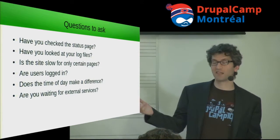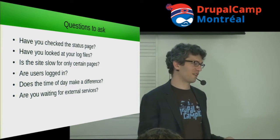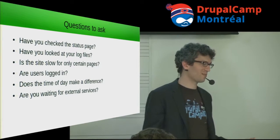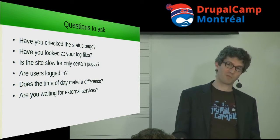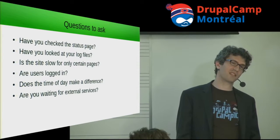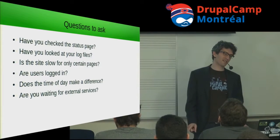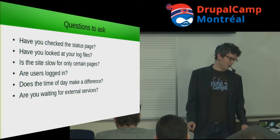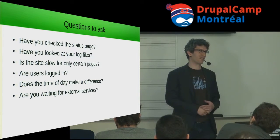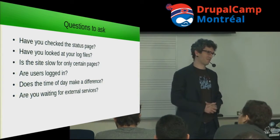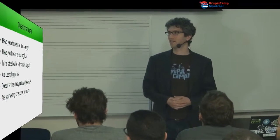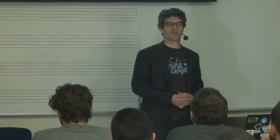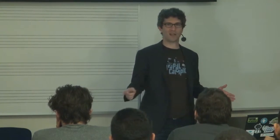Are certain pages slower than others? Say it's a views page — maybe you need to work on your view, or custom code isn't working properly, while other pages are fine. Time of day is also an issue. External services are another concern: if your site is heavily dependent on something like the Facebook API or Twitter, and those services are down, your page won't load until that times out — and that could be two minutes. Do you really want users waiting two minutes for a page to load? You need to make that timeout short.